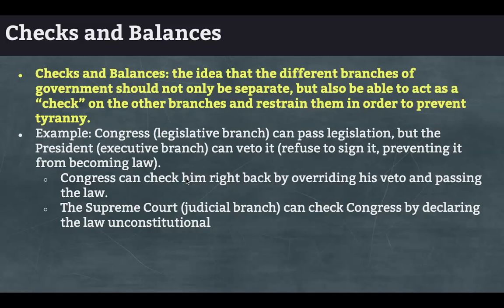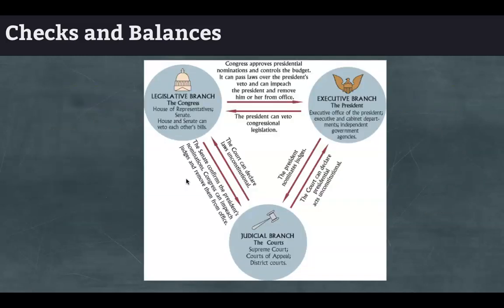Checks and balances is also built into the structure of the Constitution. It's the idea that different branches should not only be separate, but also be able to act as a check on the other branches to restrain them and prevent tyranny. For example, Congress can pass legislation, but the president can veto it. Congress can check right back by overriding the veto. The Supreme Court can check Congress by declaring a law unconstitutional. We'll go more in depth into what oversight each branch has over the others in the future.